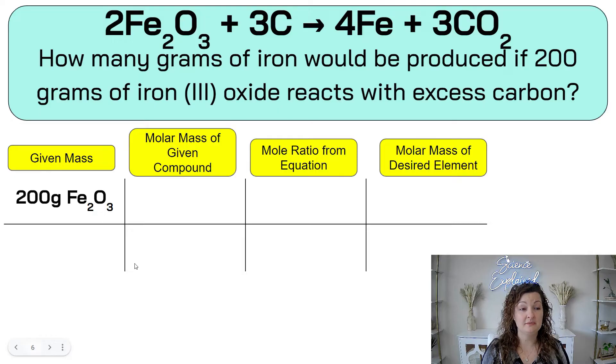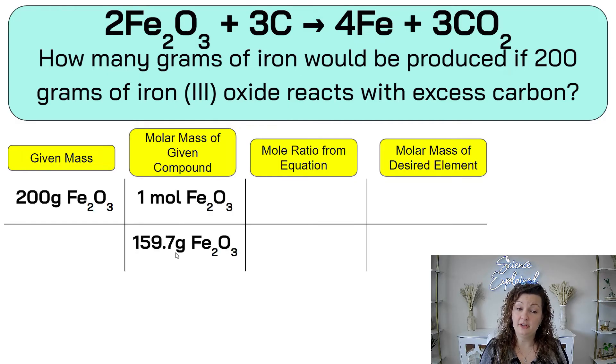We always start with what we're given, the 200 grams of Fe2O3. So diagonal down needs to be grams of Fe2O3, and it's going to be a molar mass ratio. So this is always going to be equal to one mole of that Fe2O3. If I go to the periodic table, I can look up Fe, multiply that by two, look up oxygen, multiply that by three, and then add those together. And that's going to give me the molar mass. And that number comes out to 159.7 grams.